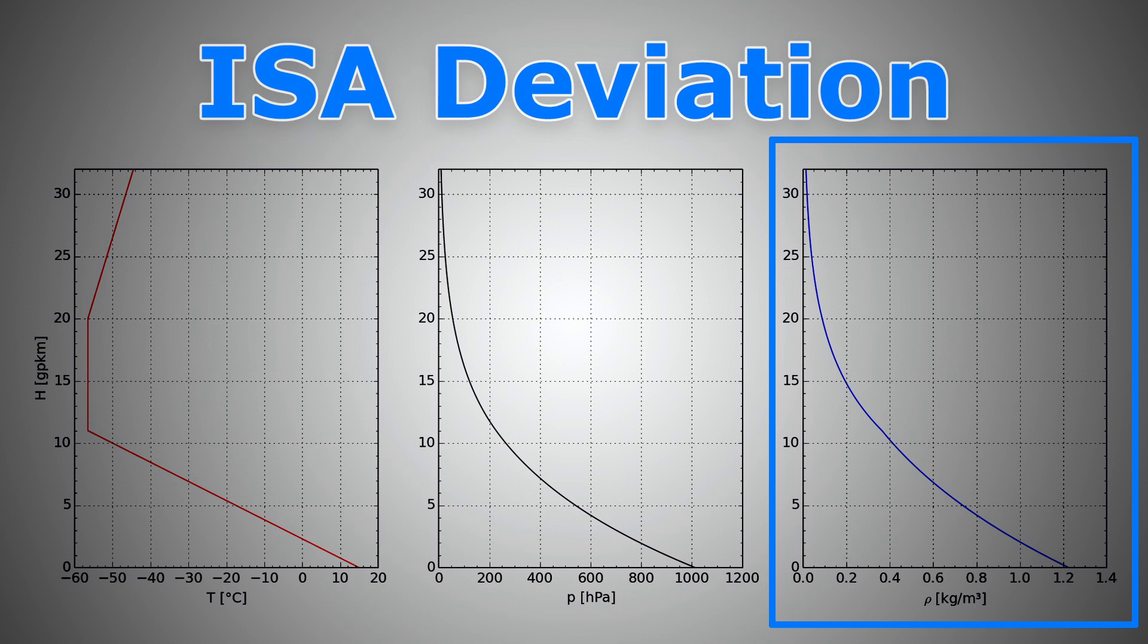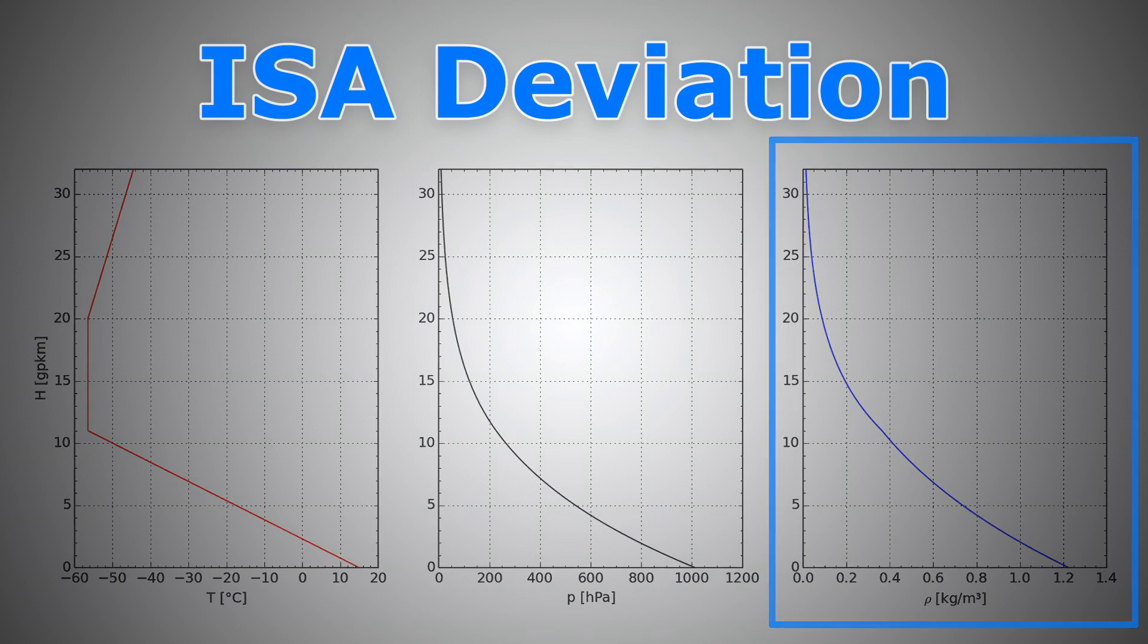And as for the density, just a rough figure you can keep in mind, mostly for ground school and exams, you won't be needing it that much in real life. But it's a good figure to keep in mind. So the standard density at sea level is 1.225 kilogram per cubic meter. So these are the standard figures for temperature, pressure, and density at sea level according to ISA.